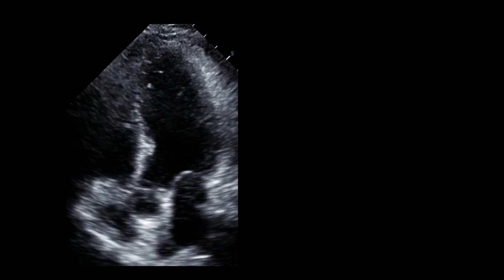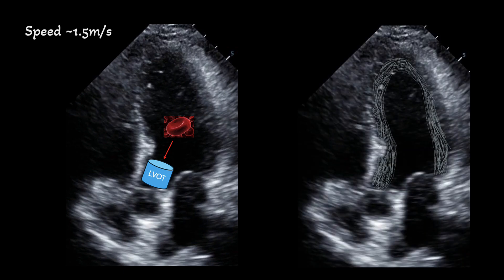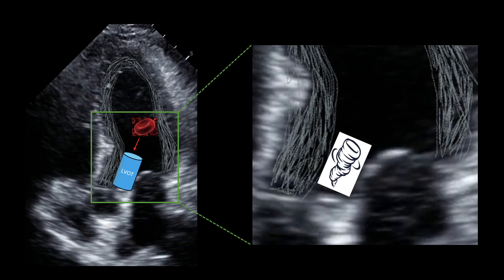This picture shows a normal heart. The LVOT is outlined by the blue cylinder. In normal circumstances, blood flows through the LVOT typically at a speed of about 1.5 meters per second or less. In contrast, someone with hypertrophic cardiomyopathy has thick myocardium that encroaches on the LVOT and causes it to narrow. When blood encounters an area of narrowing, it accelerates to speeds that exceed 1.8 to 2 meters per second. As blood accelerates, it creates negative pressure in the LVOT, resulting in a vacuum effect.